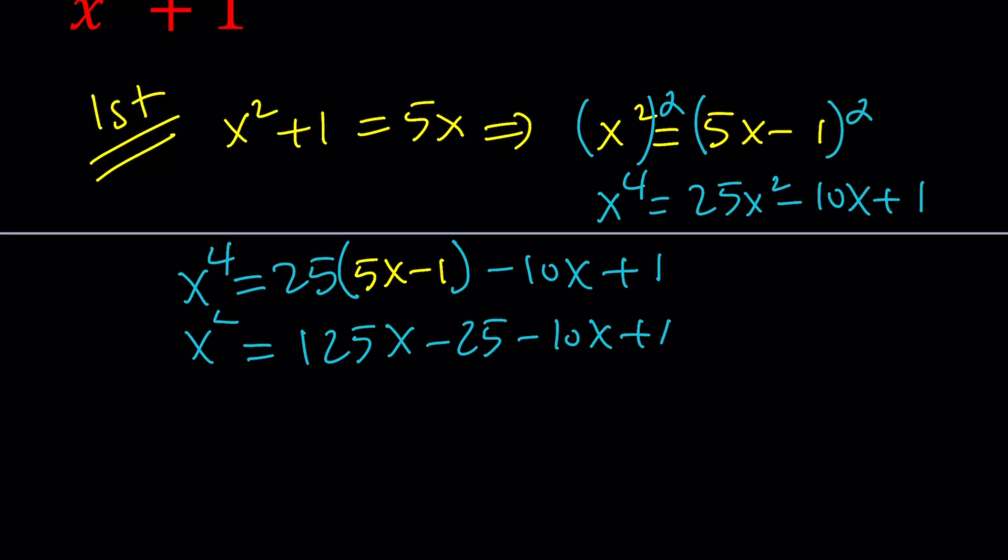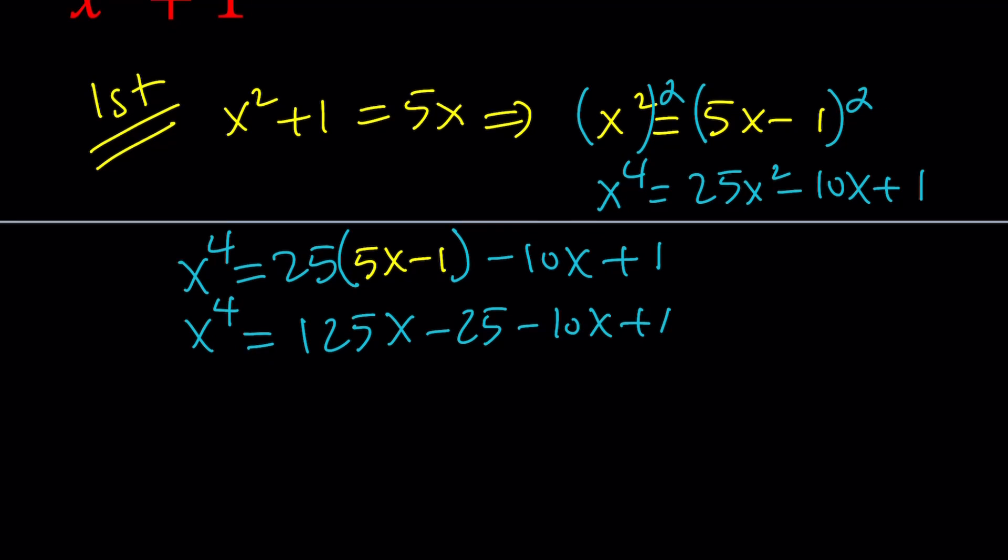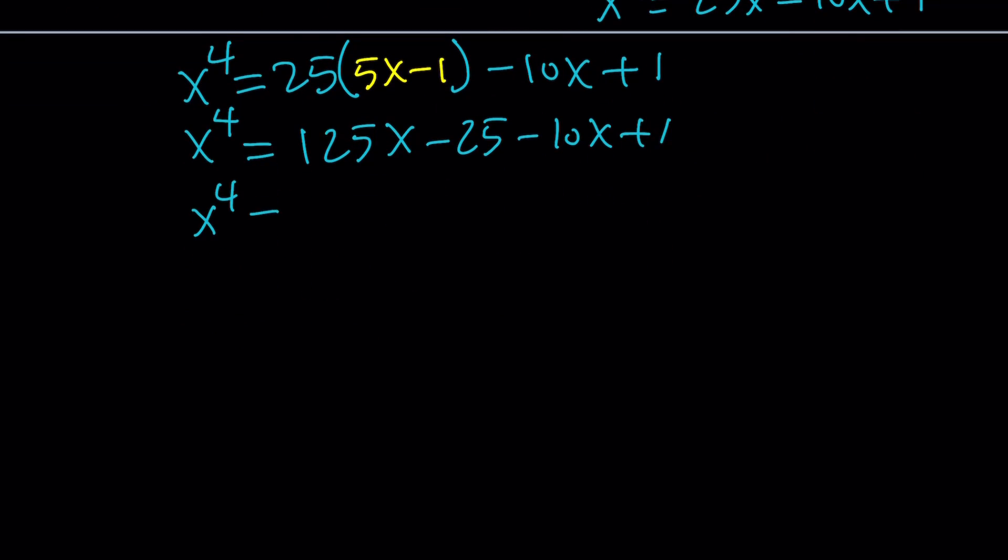So this would be equivalent to x to the 4th power. Let's simplify this. In other words, we wrote it as a linear expression. 115x minus 25 plus 1. That would be minus 24.